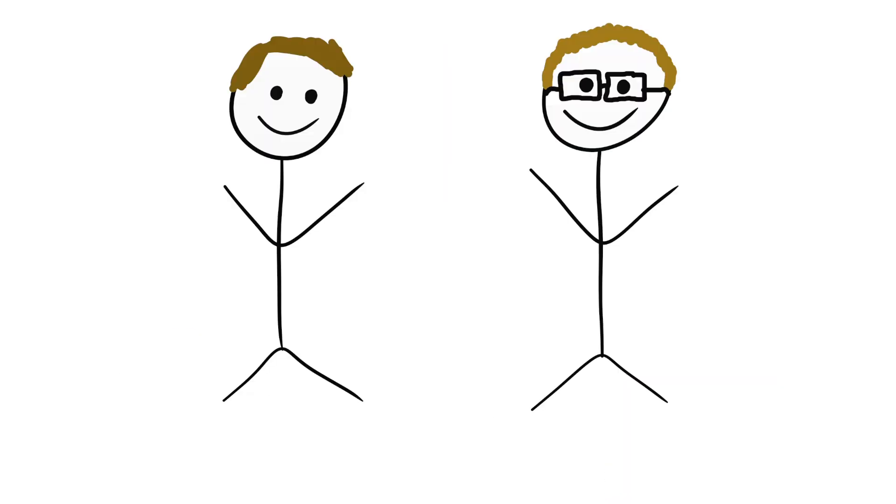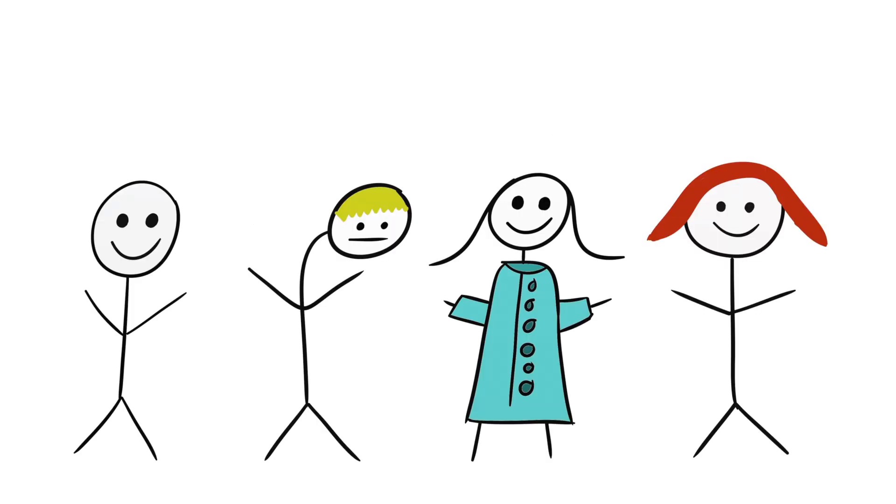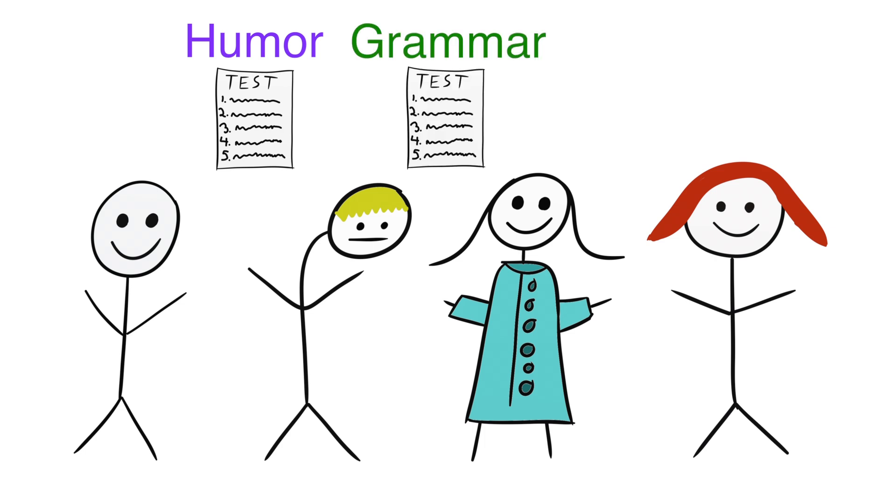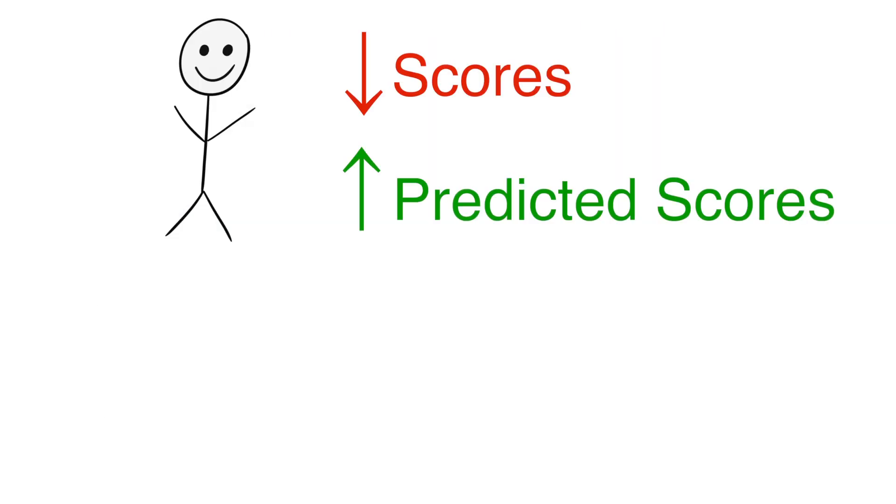This event inspired David Dunning and Justin Krueger to run an experiment to see how something like this happens. They asked undergraduate students to take a series of tests, one on humor, one on grammar, and one on logic. They then asked them to estimate their scores and how well they think they did compared to other students. The researchers found that those who scored the lowest actually had some of the highest estimates of what their scores would be. They thought they were going to do way better than they actually did.